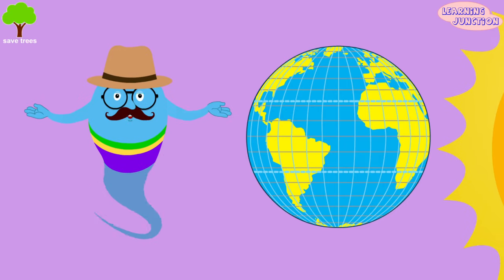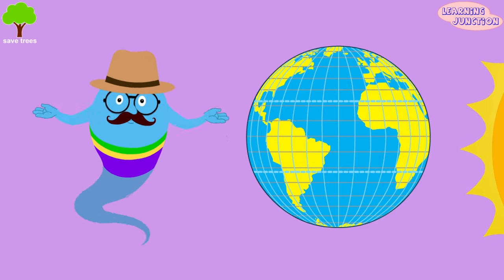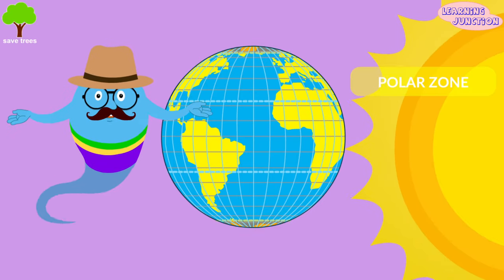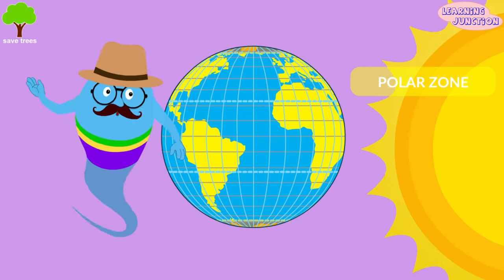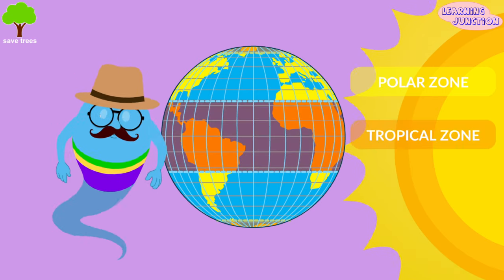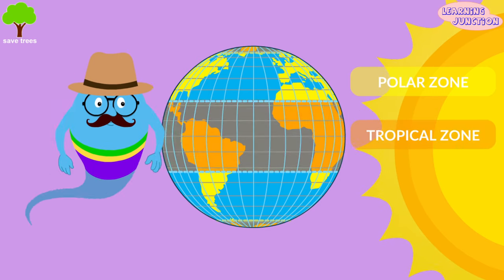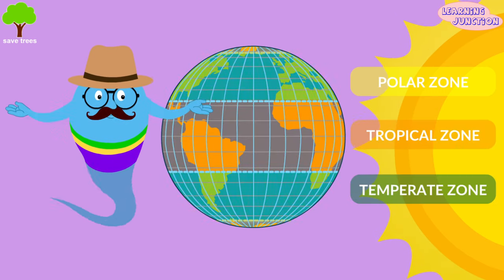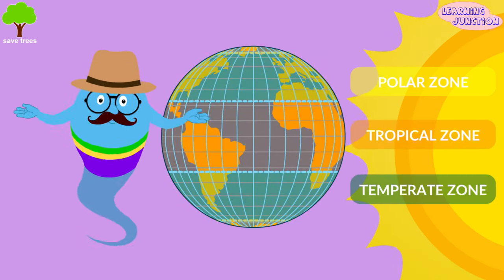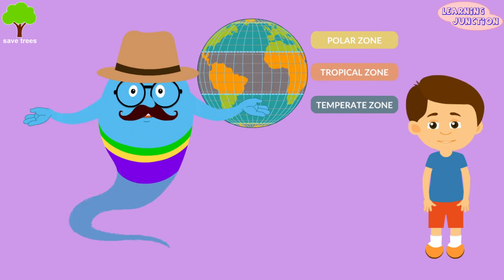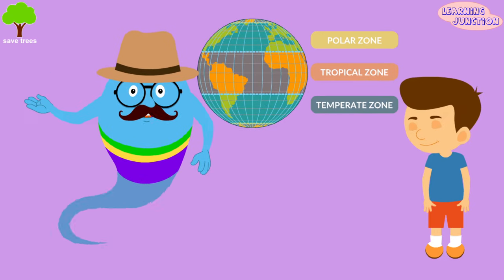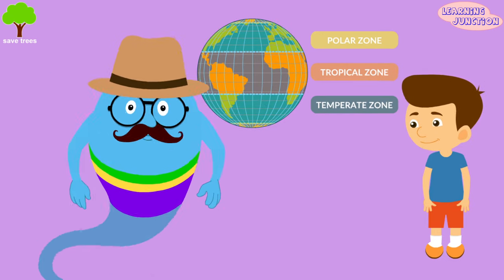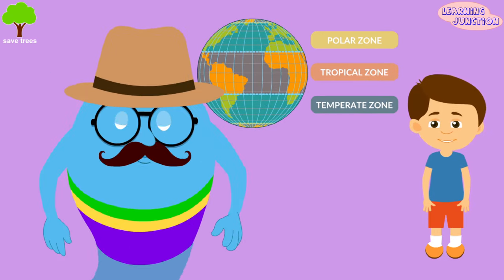Let's see the climate zones once more: the coldest polar zone, warm and humid tropical zone, and the moderate temperate zone. Now you know a lot about climate zones in the earth. Stay tuned for more videos. Bye-bye.